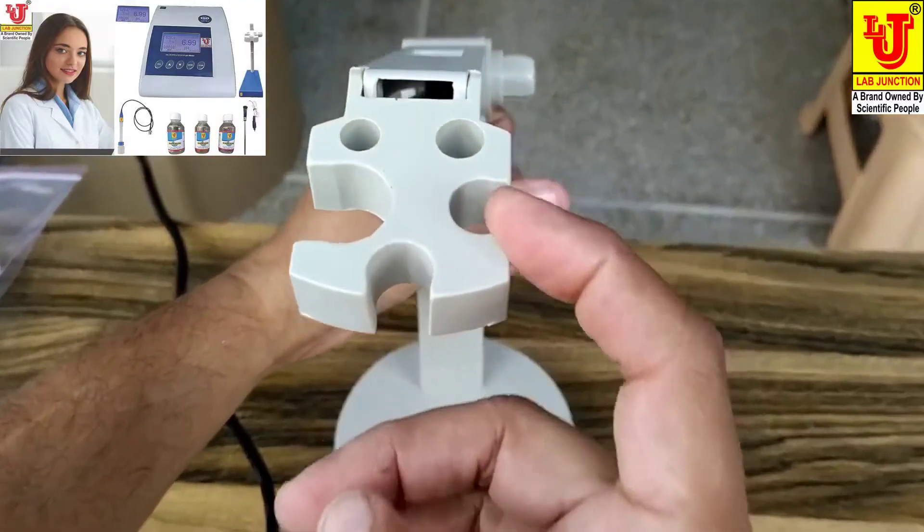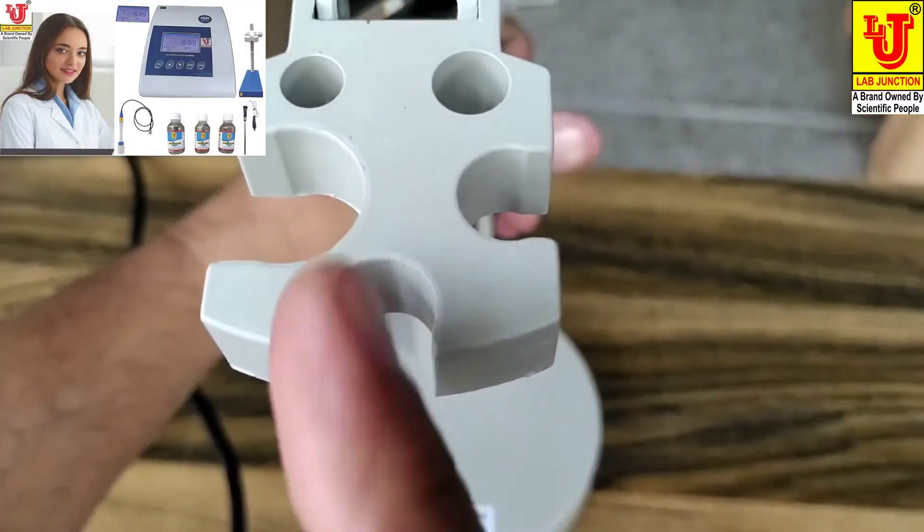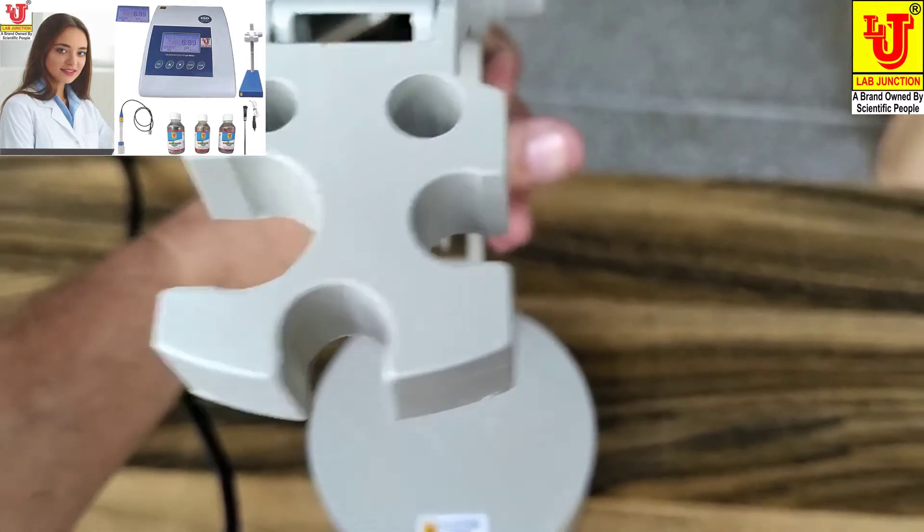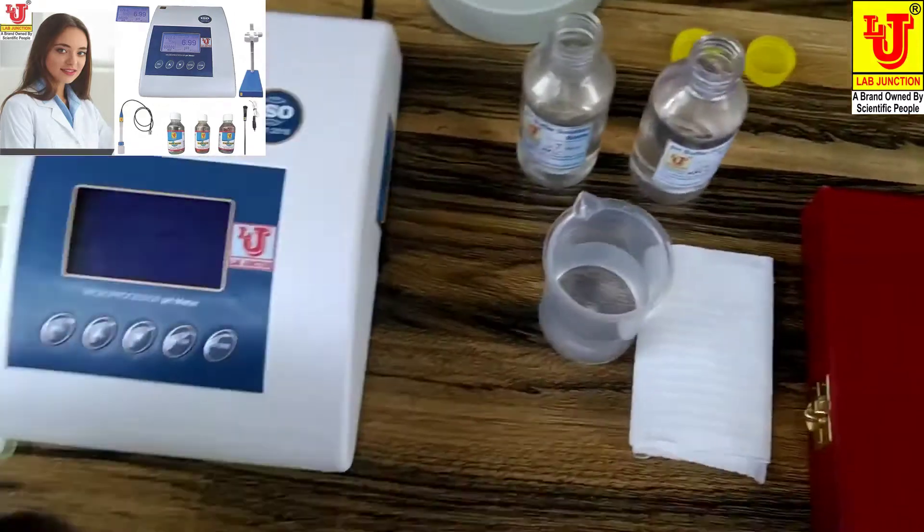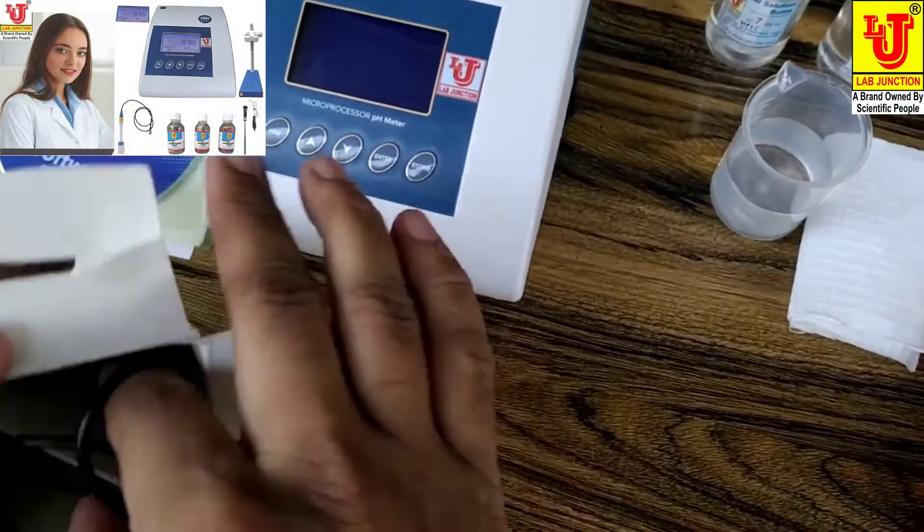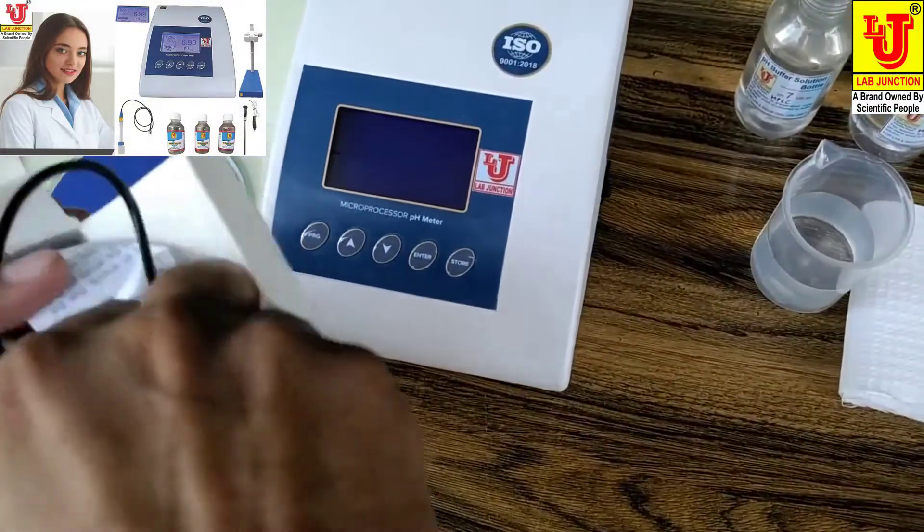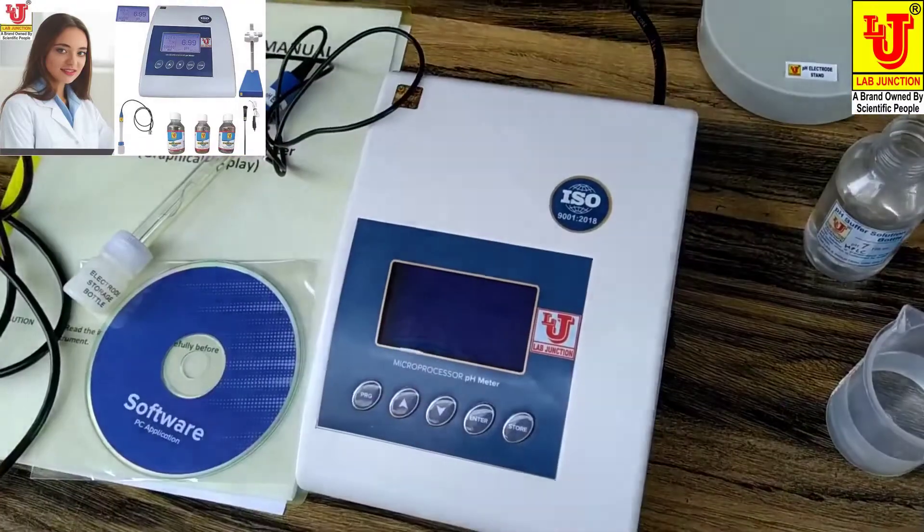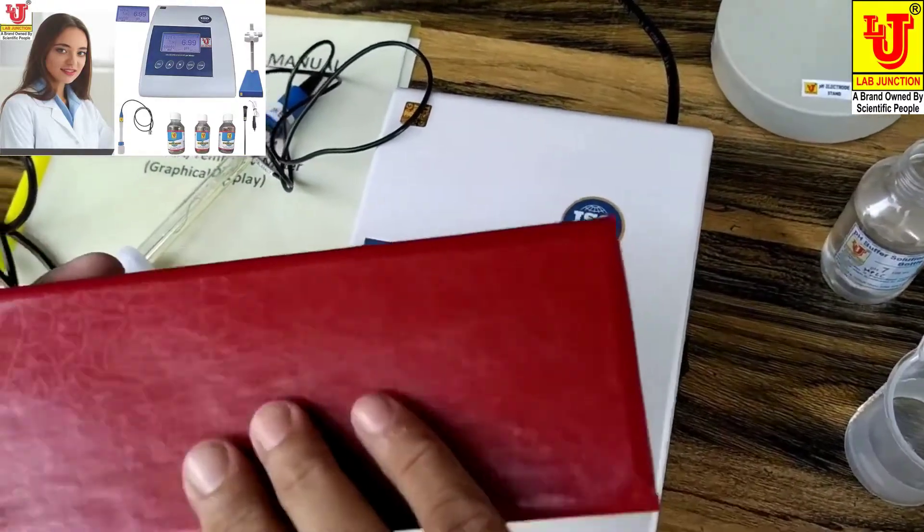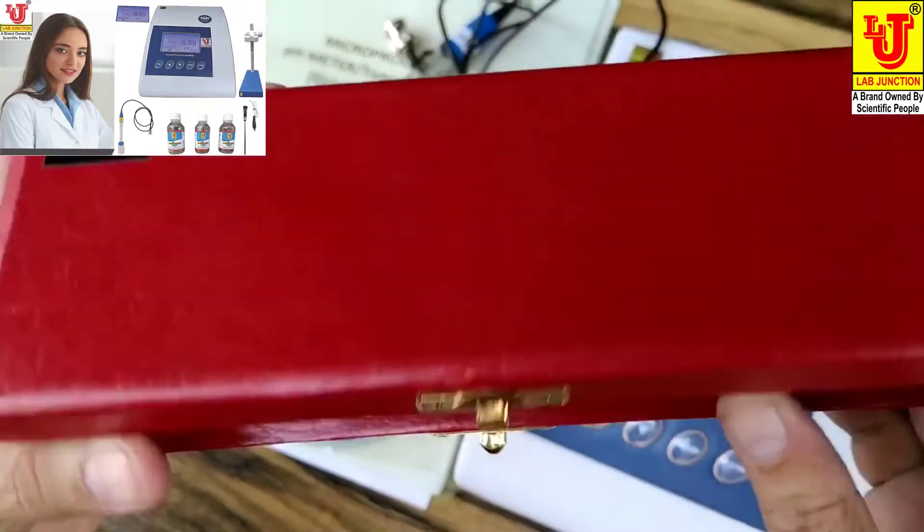This slot is for the temperature sensor, and this slot is for the pH electrode. Now this is the pH electrode. And this is the temperature probe, also you can say temperature sensor.